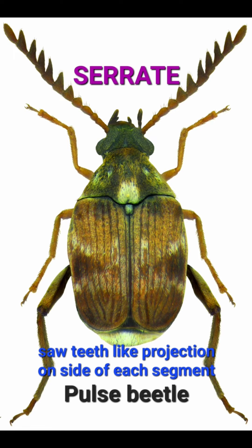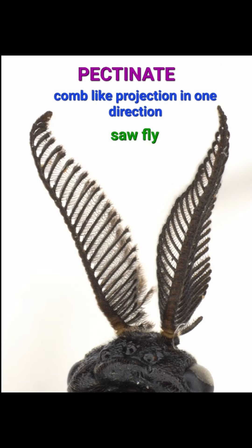Next is pectinate type antenna. In this, comb-like projection can be seen in one direction from each segment of the antenna, like in sawfly.